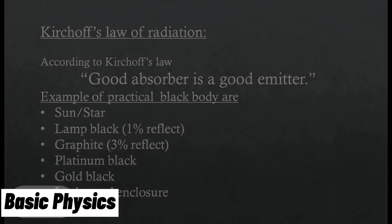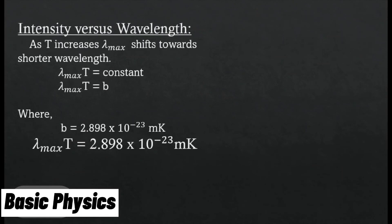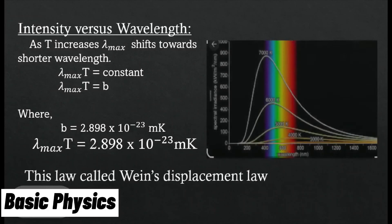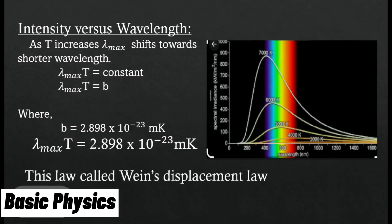Intensity versus wavelength graph. As temperature increases, wavelength lambda maximum shifts towards shorter wavelength. Lambda maximum multiplied by temperature is constant, which equals 2.98 times 10 raised to minus 3 meter Kelvin. This law is called Wien displacement law.